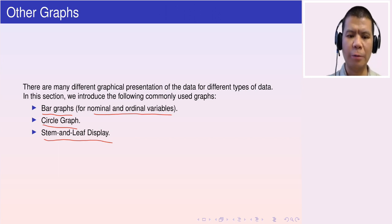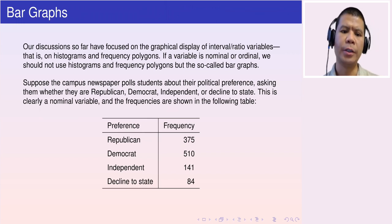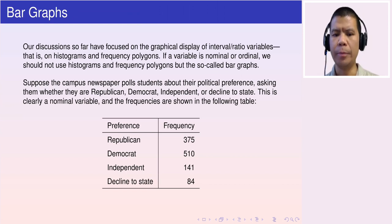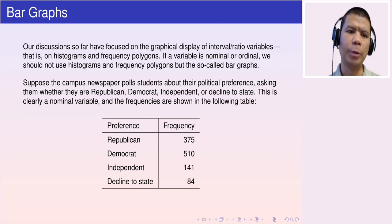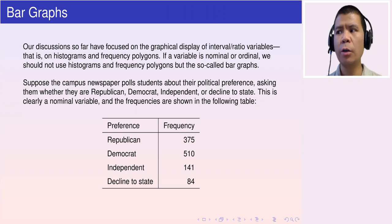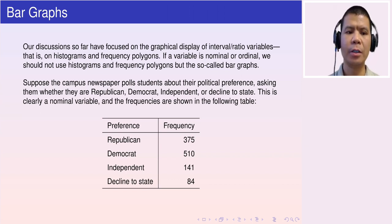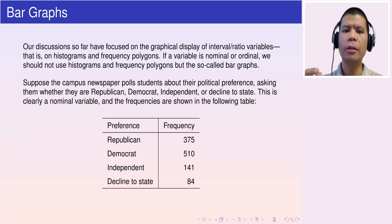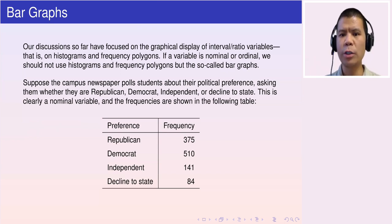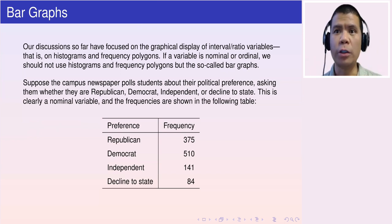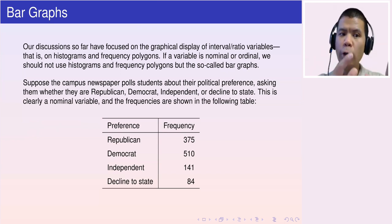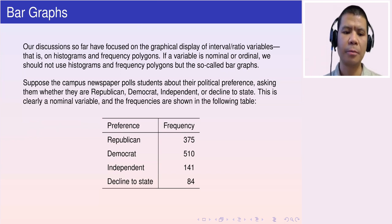The first one is the bar graph, which is for nominal and ordinal variables. The second is the circle graph, and finally the stem and leaf display. Our discussion so far has been about the graphical display of interval or ratio level variables — like histograms and frequency polygons. These represent data at the interval or ratio level, such as weight or temperature, where differences make sense and we have a defined interval width.